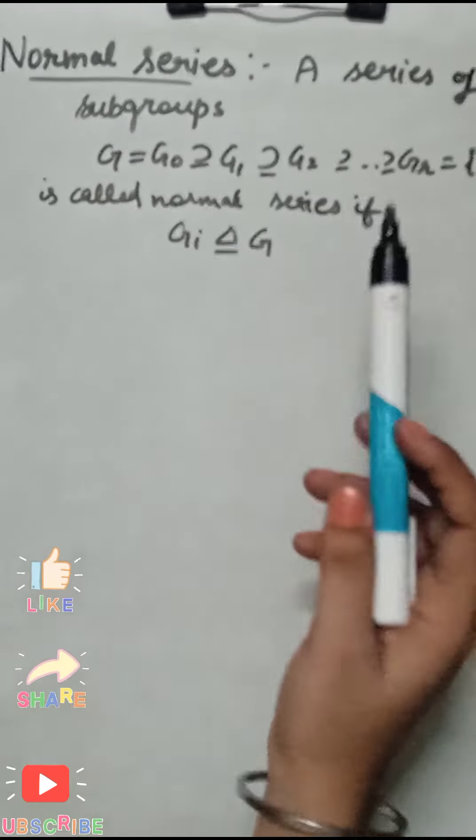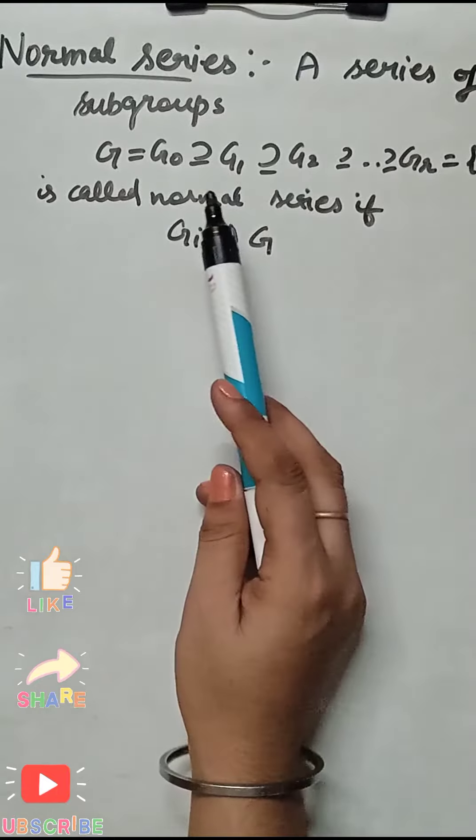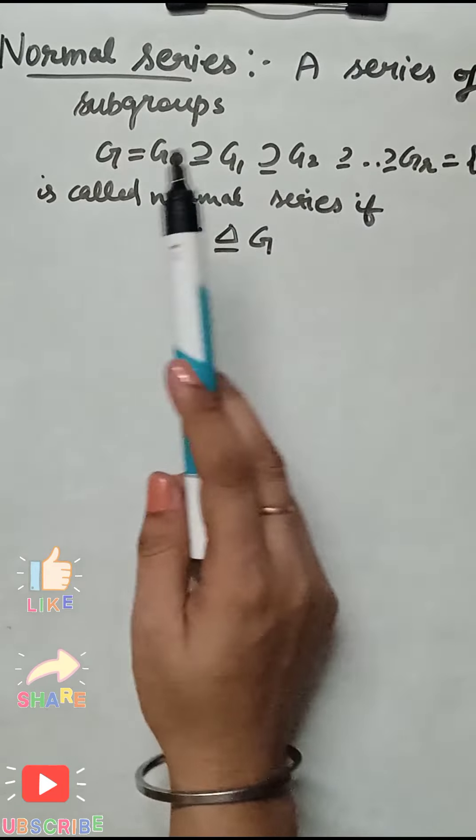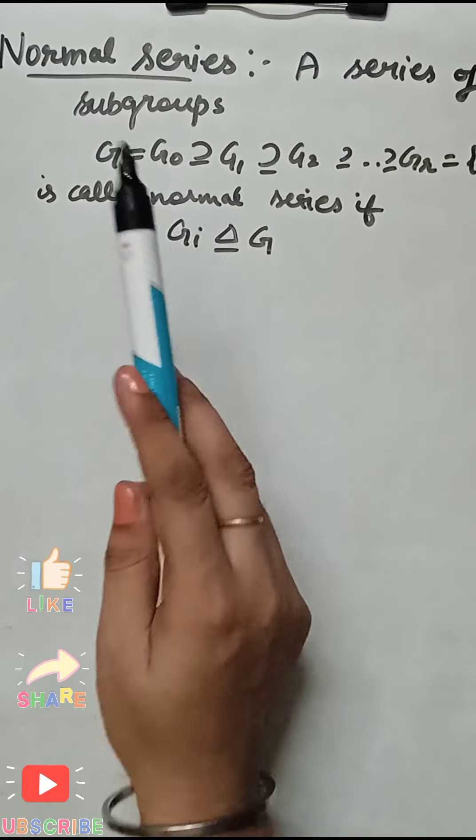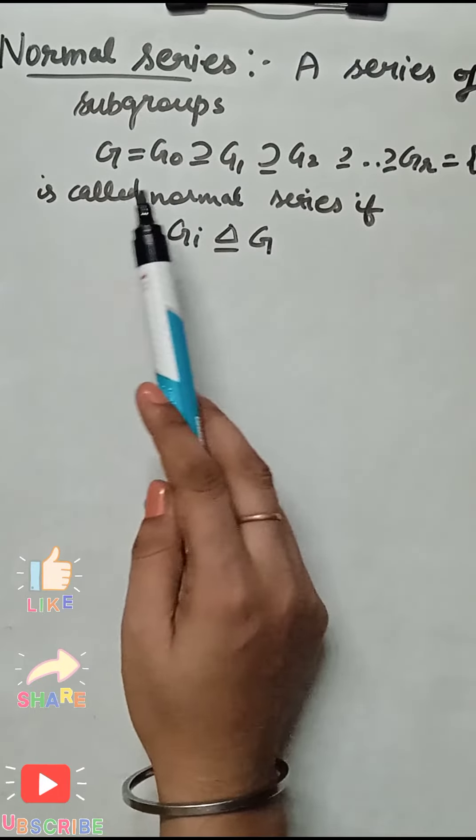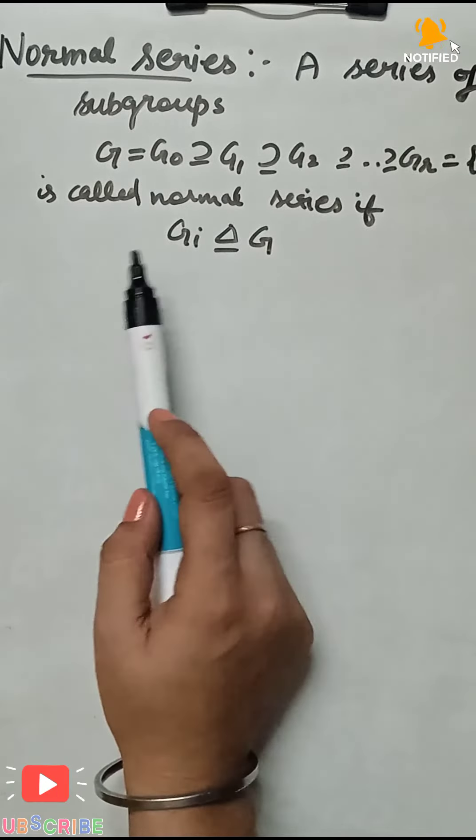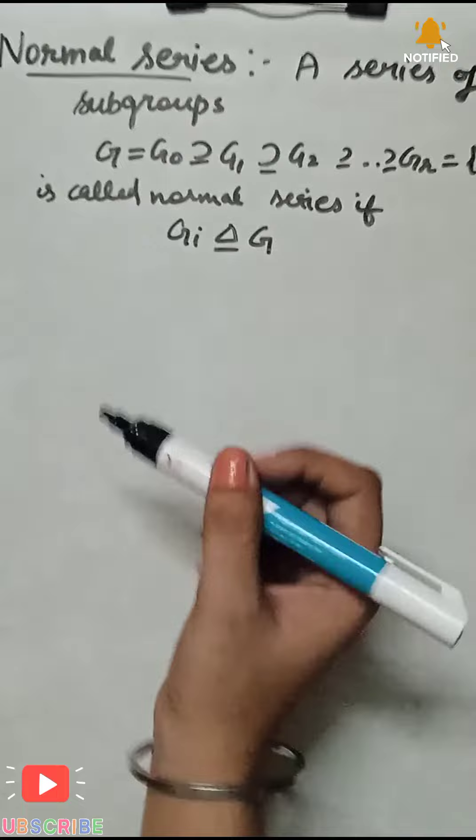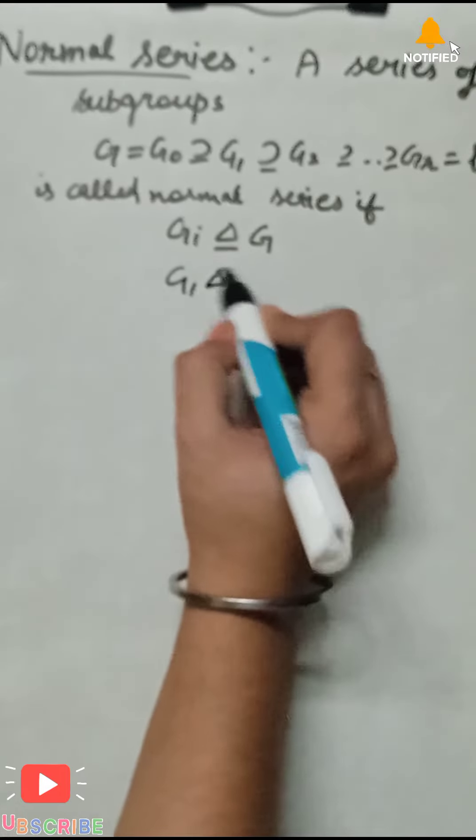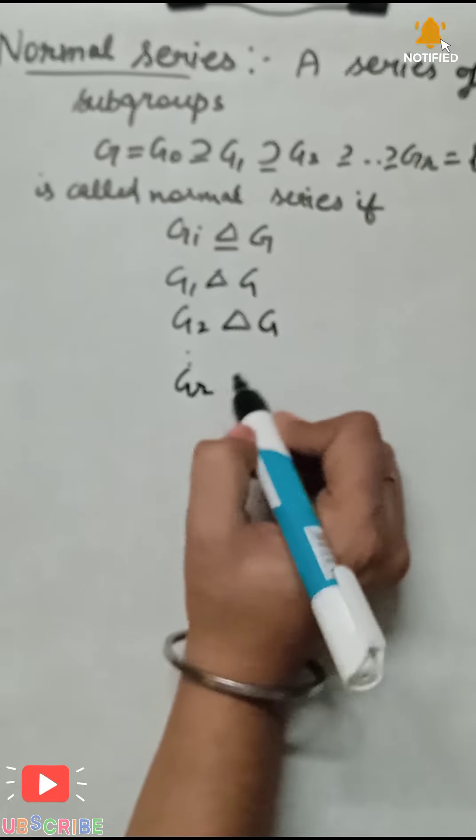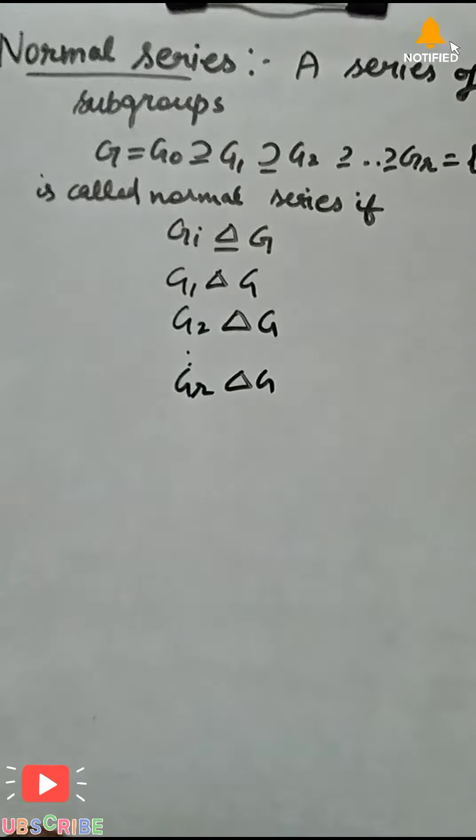This series of subgroups is called a normal series when Gi is a normal subgroup of G. This means G1 is normal in G, G2 is normal in G, and so on Gr is normal in G. If all Gi are normal in G, the series is a normal series.